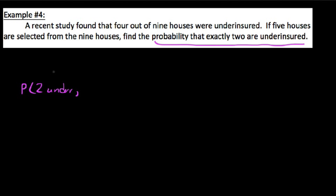The other thing I want to mention is this. If it is not underinsured, then it's something else. But in this instance, we're saying if five houses are selected from the nine houses, find the probability that exactly two are underinsured. So we want two under, and since we're grabbing five total, that really means we also have three not underinsured. But this is what we want to find the likelihood of.